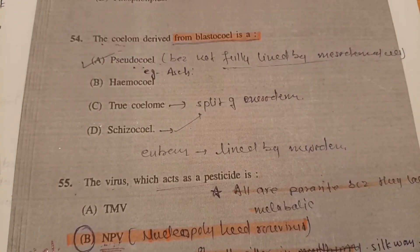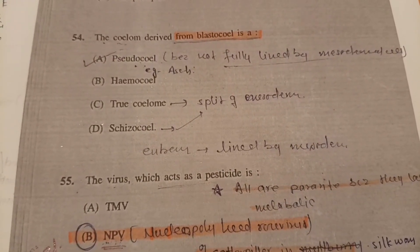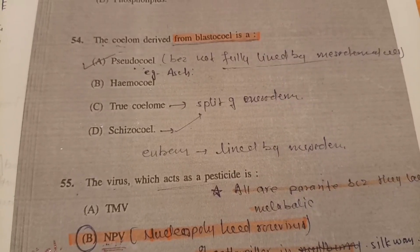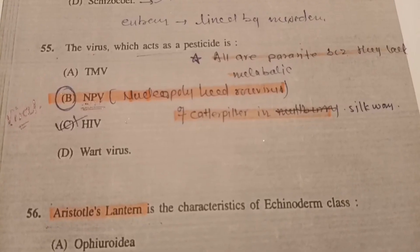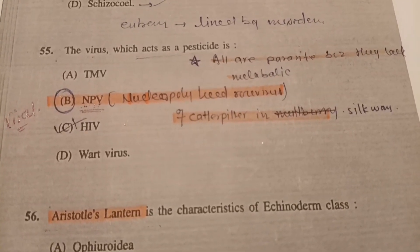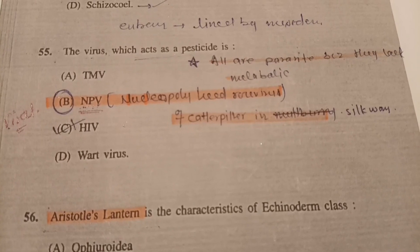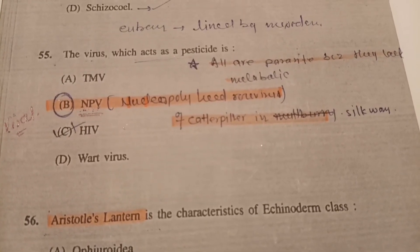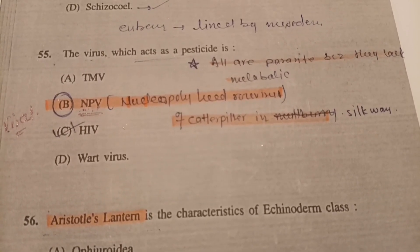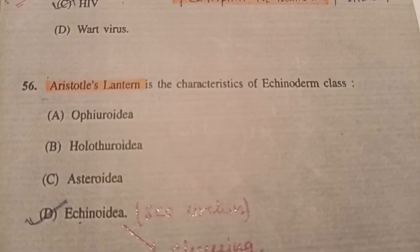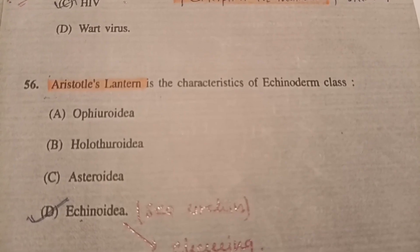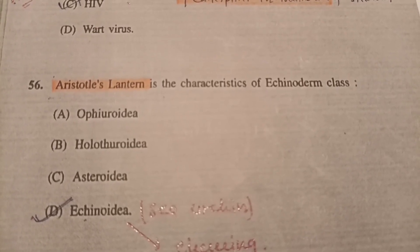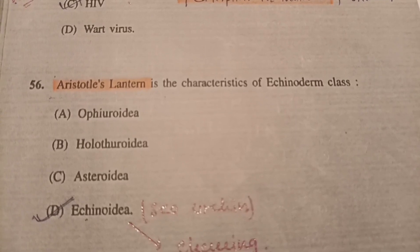Question 54: The coelom derived from blastocoel is option A, pseudocoel. Question 55: The virus which acts as a pesticide is option B, NPV (Nuclear Polyhedrosis Virus). Question 56: Strobilization is a characteristic of — option D, Echinodea, is the correct answer.